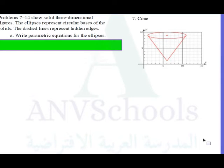Problem 7-14 shows solid three-dimensional figures. The ellipses represent circular bases of the solids. The dashed lines represent hidden edges.